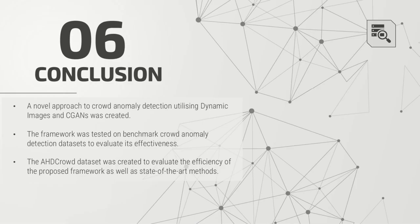In conclusion, a novel approach to crowd anomaly detection utilizing dynamic image representations and CGANs was created. The framework was applied on benchmark datasets to evaluate its effectiveness compared to state-of-the-art methods, and results demonstrated the advantages and disadvantages of incorporating each motion representation into the proposed framework. The AHD crowd dataset was created to evaluate the efficiency of the framework and state-of-the-art methods for detecting anomalies in high-density crowds, establishing the necessity for crowd anomaly detection methods to consider high-density crowds in their training and testing processes. Thank you.